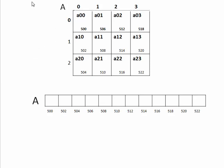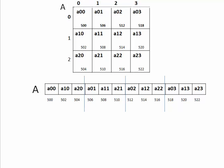Next we will see column major mapping. The array is still created as a single dimension in main memory starting from address 500. With column major, elements are filled column by column: a[0][0], a[1][0], a[2][0] is column 0, then column 1, then column 2, and so on.